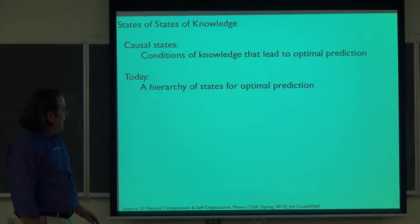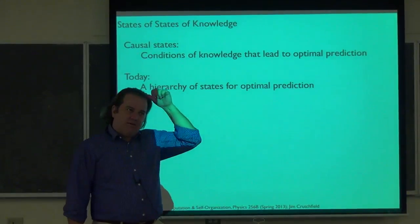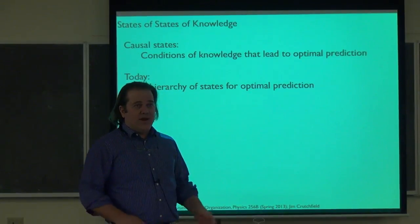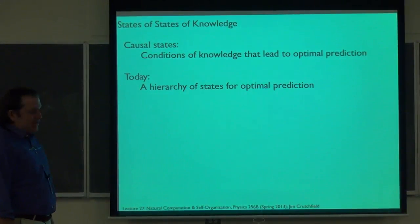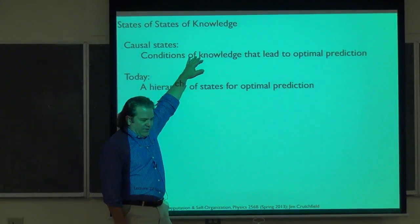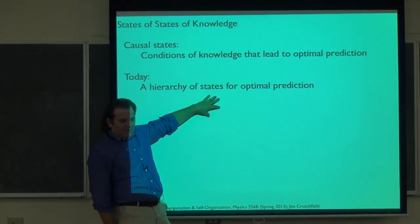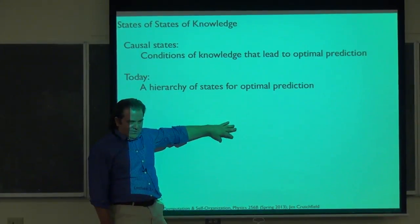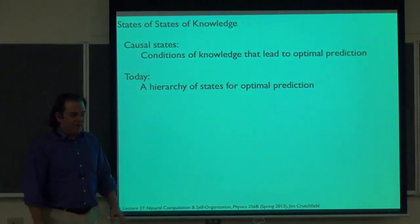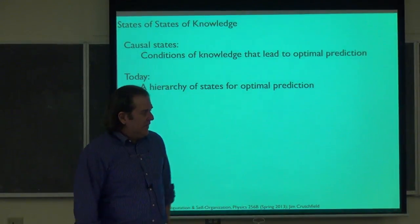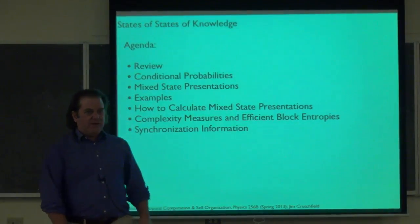What I'm going to introduce today is a hierarchy of states of optimal prediction. The language will largely focus on different kinds of models or presentations, different kinds of states. The original predictive equivalence relation actually induces conditions of knowledge for optimal prediction — it's conditions of conditions of knowledge for prediction. It actually telescopes out. We're only going to go up one level, which is all that's really necessary for most things. Until we get to infinite state processes, then it becomes unavoidable.